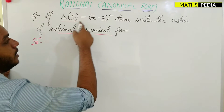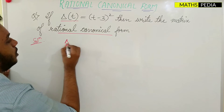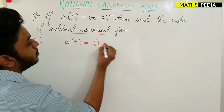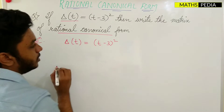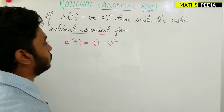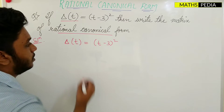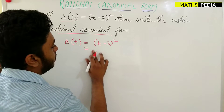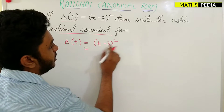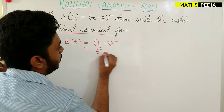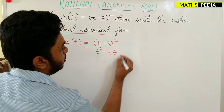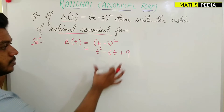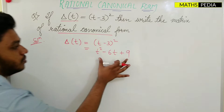The first step is that you have to expand Δ(T), that means expand the characteristic equation if it is not already expanded. So (T-3)² expands to T² - 6T + 9. This is the expanded form.